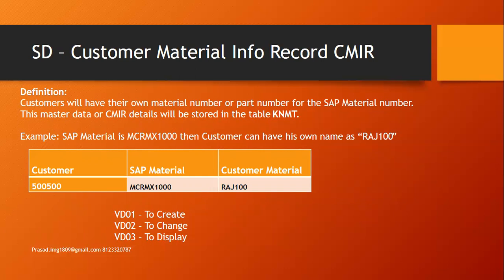For example, the customer can have his own name as RAJ100, whereas the SAP material or SAP part number is MCRMX1000. I'm going to show this in the SAP screens also, and how this customer material information record plays a major role and what areas it has significance in the system.